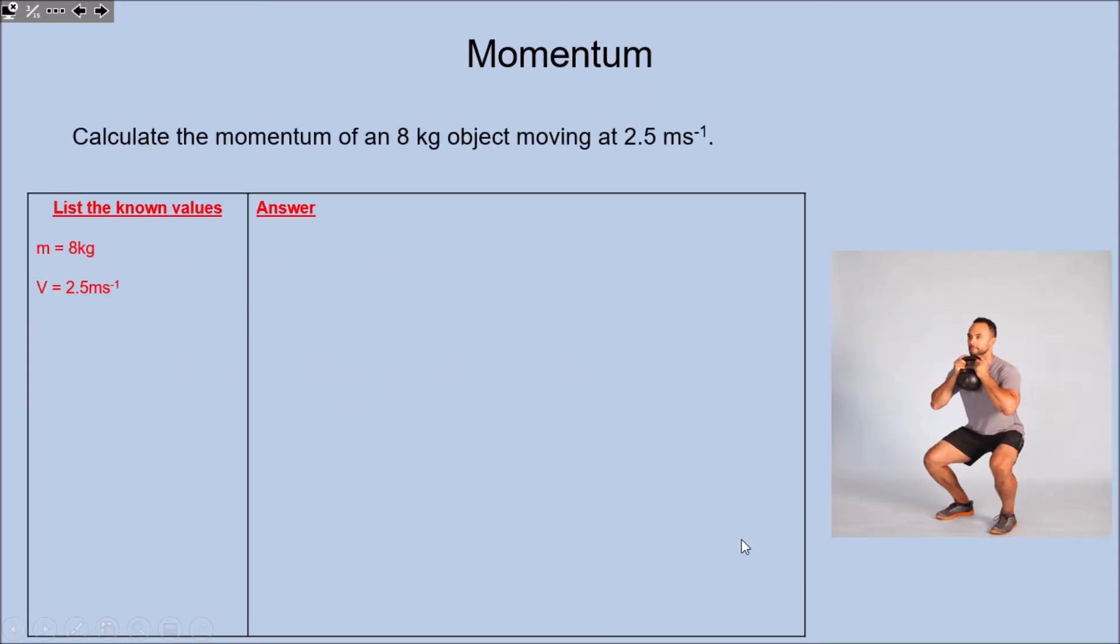Calculate the momentum of an 8 kilogram object moving at 2.5 meters per second. As always, I've made a nice little list of unknown values here. If I know these values, I can calculate my momentum. I'm going to lay out the formula: p equals m times v, so p equals 8 times 2.5, so p equals 20 kilogram meters per second.